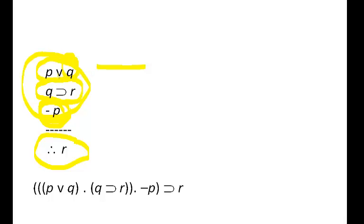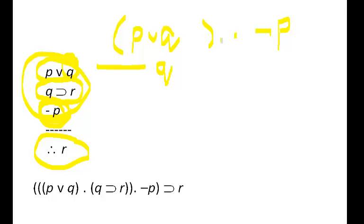Disjunctive syllogism tells us that if you've got P or Q and you've got not P, then Q follows — from P or Q and not P. For example: you can have cake or ice cream, and you can't have cake, so therefore you must have ice cream.